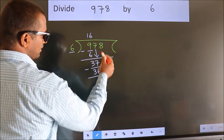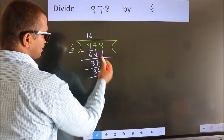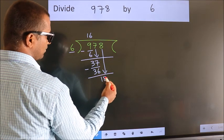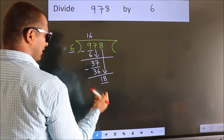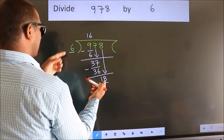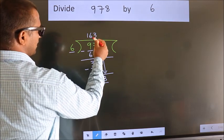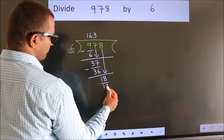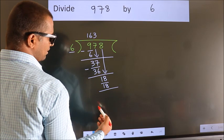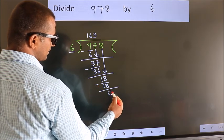After this, bring down the beside number. So 8 down, so 18. When do we get 18 in the 6 table? 6 times 3 is 18. Now we subtract. We get 0.